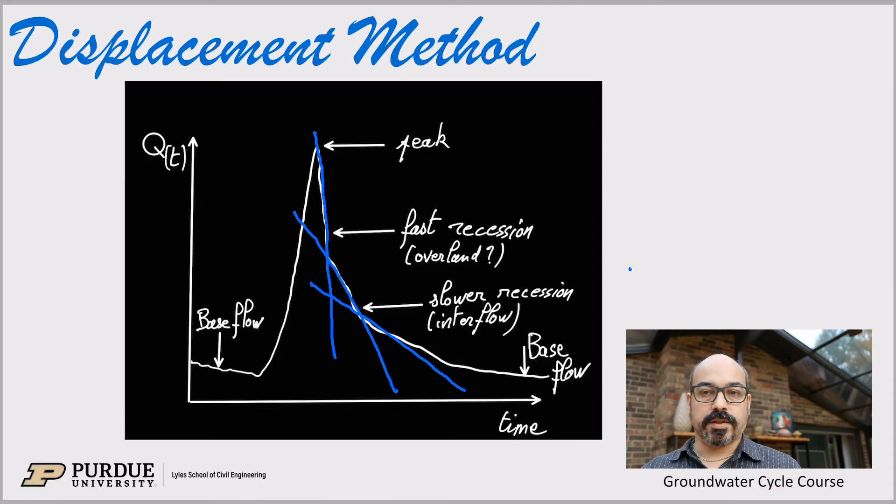Then after that there's a somewhat slower recession, that second part here. And this is typically due to some water that infiltrated and is pushing. So it's sort of a piston flow. It's kind of pushing the water still somewhat fast towards the river, flushing out to the river, but with some underground flow path.